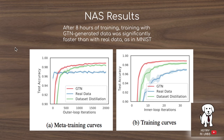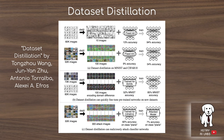An interesting comparison is against dataset distillation, which takes a similar approach of distilling the original training set information down to 10 or 100 images. A key difference is that dataset distillation doesn't generate images from random noise as in the generative teaching network, and it deliberately focuses on very small datasets of 10 or 100 images compared to the 32 batches of 128 images used in generative teaching networks.